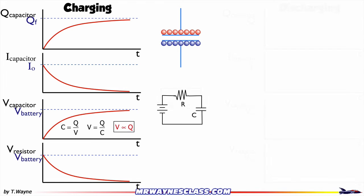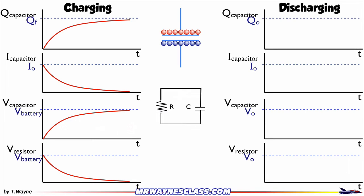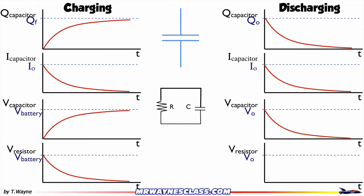Let's take a quick look at discharging. The nice thing about discharging is the curve is all kind of the same. At first a lot of charge flows off, then there's less charge to flow off, so the curve decreases. For the current, at first a lot of charge flows off the capacitor, and then eventually there's not much charge left, so it decreases. As the charge leaves, so does the potential difference, and the resistor is going to do the same thing as the capacitor because the capacitor's voltage is the same as the resistor's voltage. So the graphs are the same.